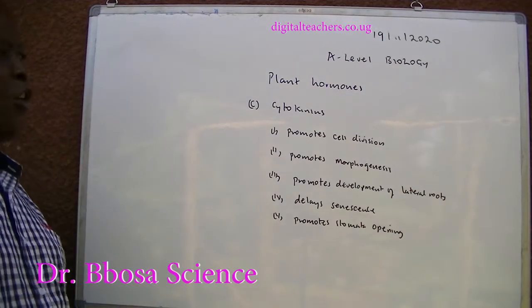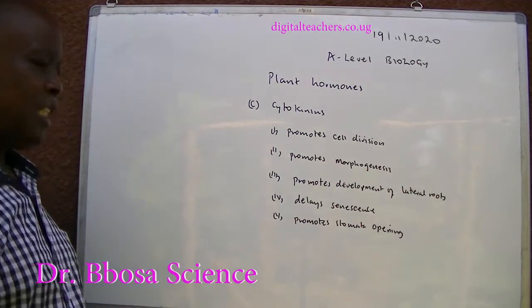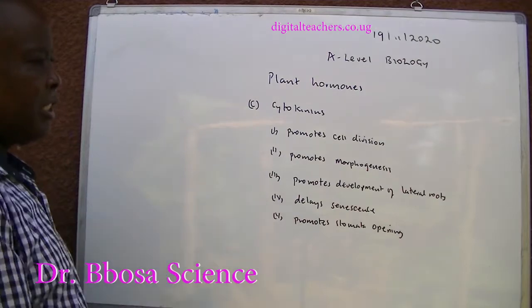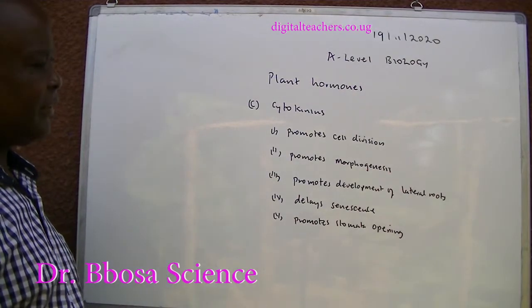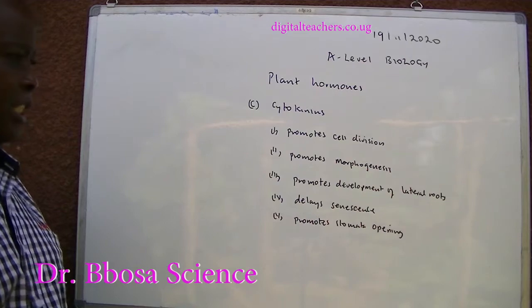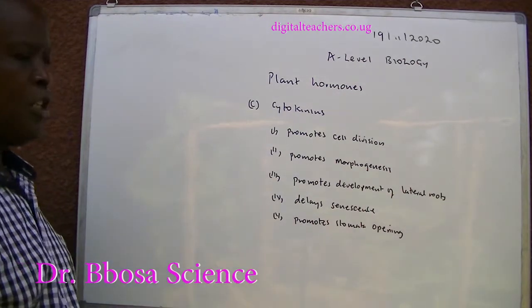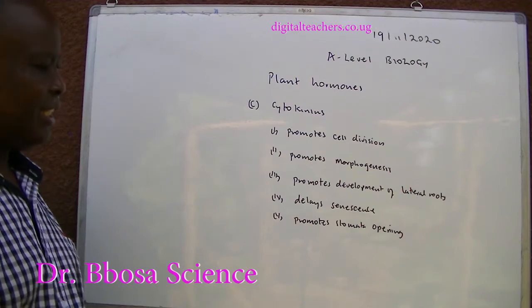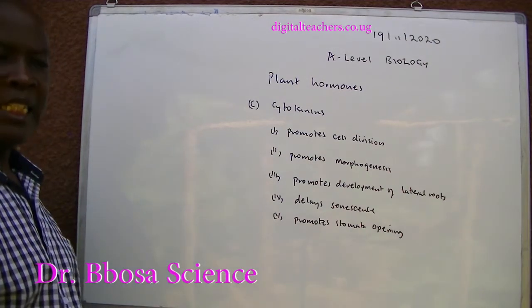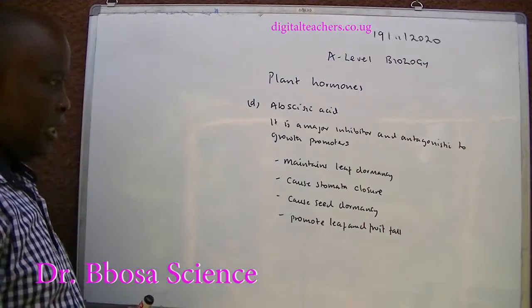Another hormone is cytokinin. Its roles: one — promotes cell division; two — promotes morphogenesis; three — promotes development of lateral roots; four — delays senescence; five — promotes stomatal opening.